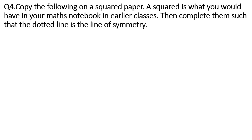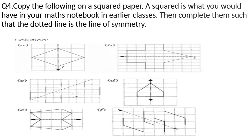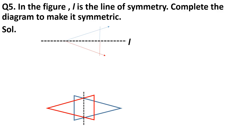Question 5: In the given figure, L is the line of symmetry — complete the diagram to make it symmetric. The blue portion is given; the black dotted line is the line of symmetry; the red line is what you need to draw. Draw a slanting line and a small vertical red line mirroring the upper portion. When folded along the black dotted line, the two halves overlap.